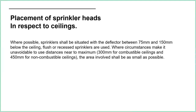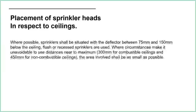Where beams make it difficult to place heads at 75–150mm, we have to use different methodologies. There are extended rules: up to 300mm for combustible ceilings and 450mm for non-combustible ceilings. However, there is a clause — the area involved shall be as small as possible. This shouldn't be done just because it's easier or quicker; there must be a good structural reason for extending those distances.